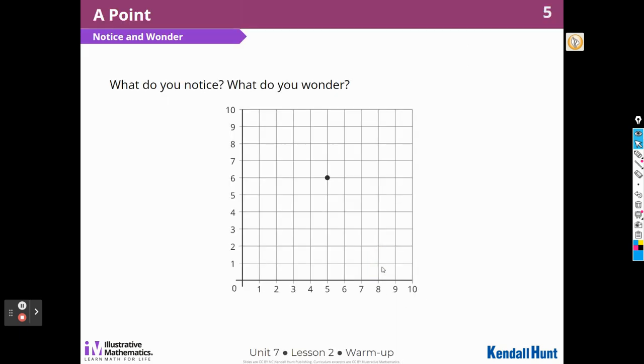What do you notice? What do you wonder? Well, I noticed that this is a coordinate grid that I learned about yesterday, and that it has a vertical axis and a horizontal axis. I also noticed that there is a point on it. I see that if I followed this line here, it would be 5, and if I followed this line over here, it would be 6. And I wonder what I could do with that information. Why aren't there any shapes on this? I wonder, why is there only one point? Could we put more points on this grid?